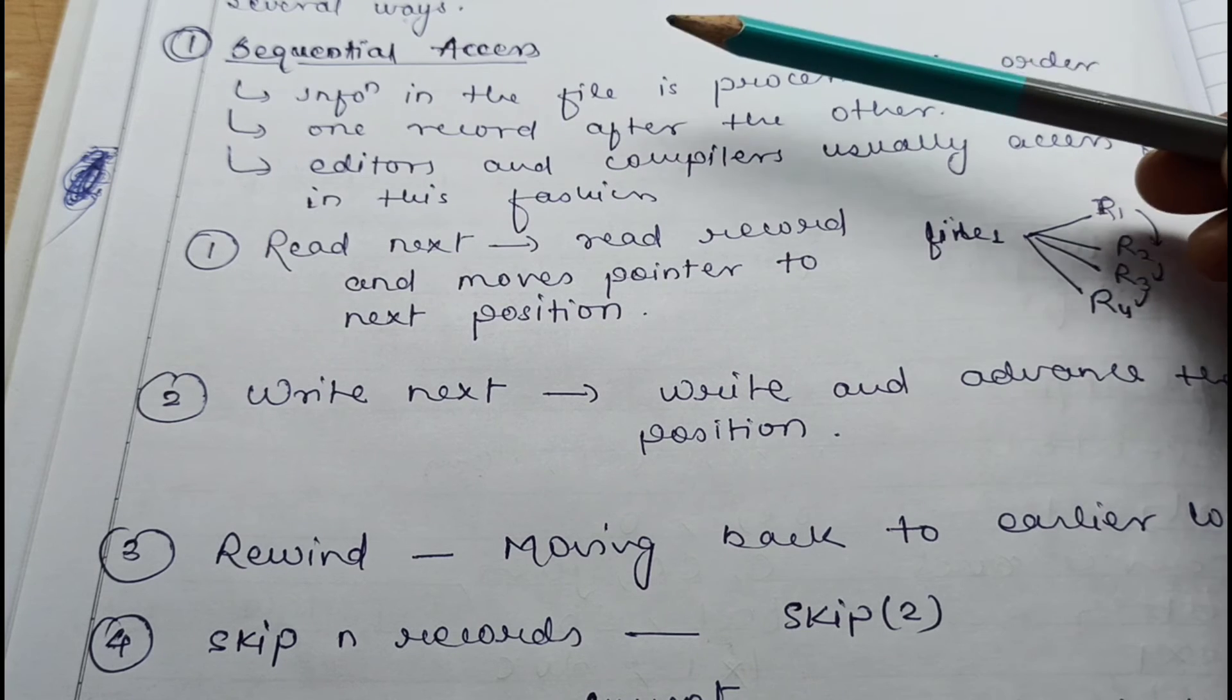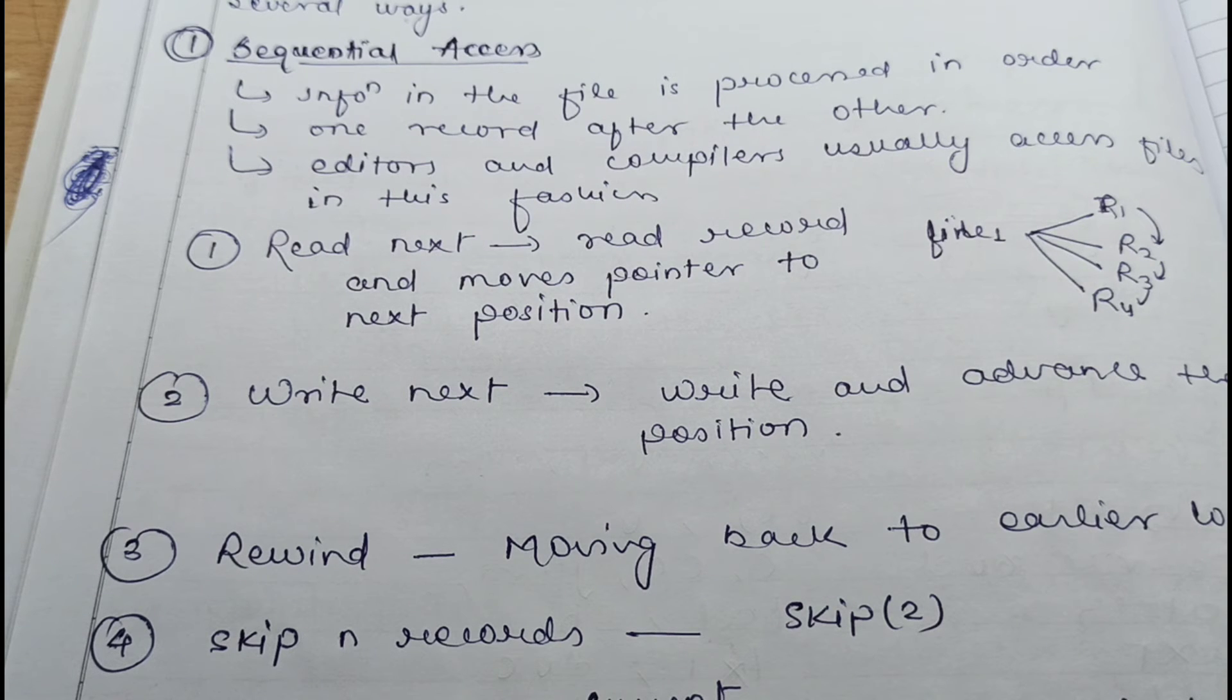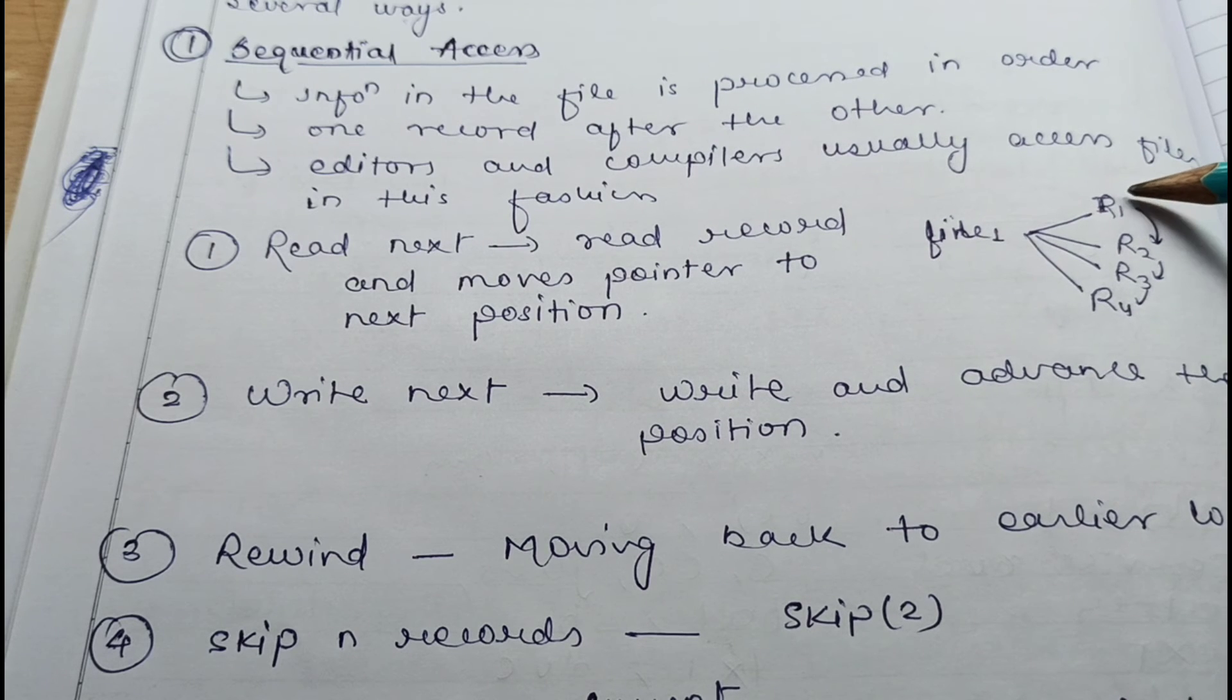In sequential access, we process the information inside the file in order, that means one after another. If there are four records in the file, we have to access record one, then next record two, then next record three, then next record four. We have to go sequentially. This is the simplest access method and it is mainly based on the tape model. Magnetic tape goes sequentially - if you want to access the third record, you have to cross the first and second also. Do you remember the cassette player? We cannot directly go to the third song; we have to pass the first and second.